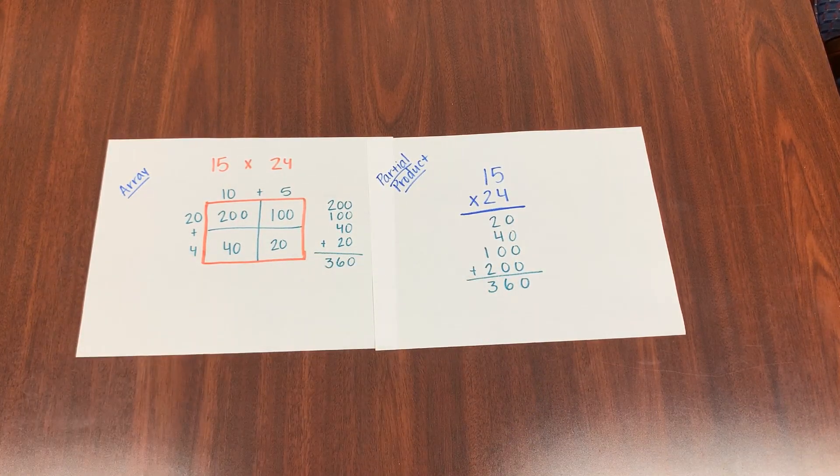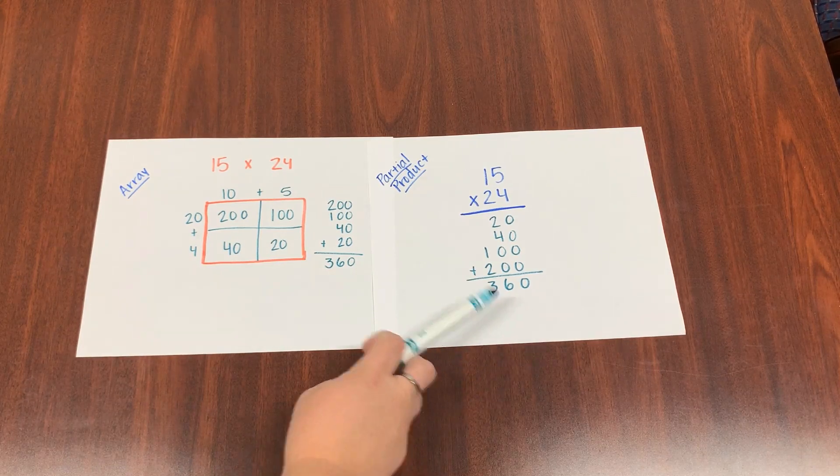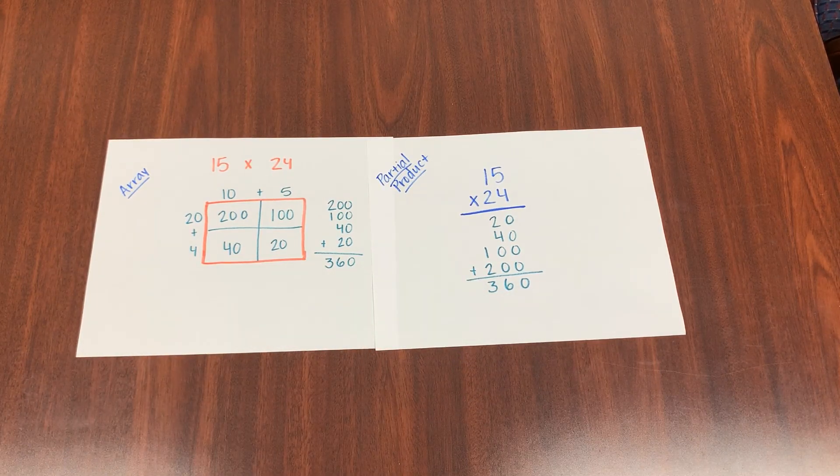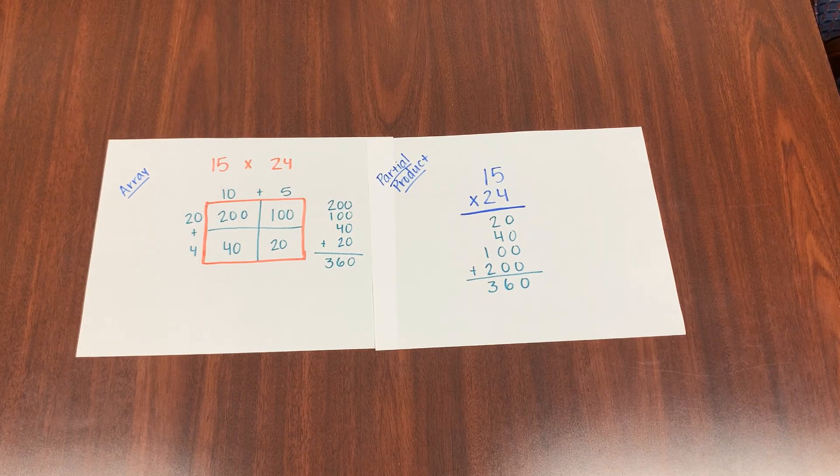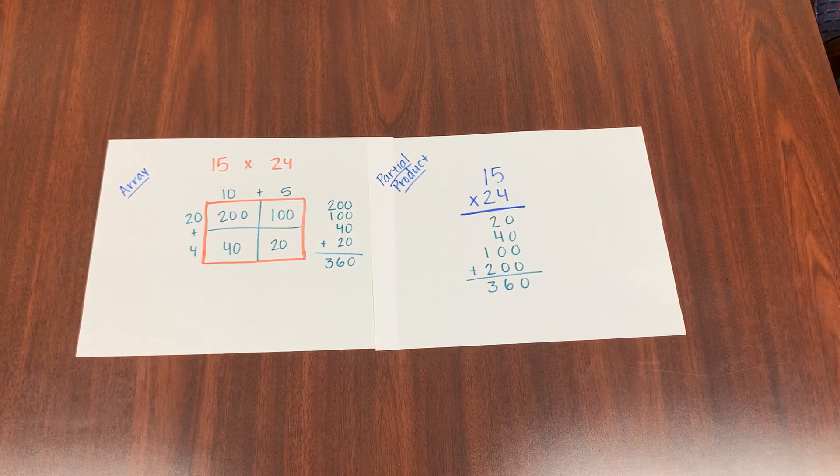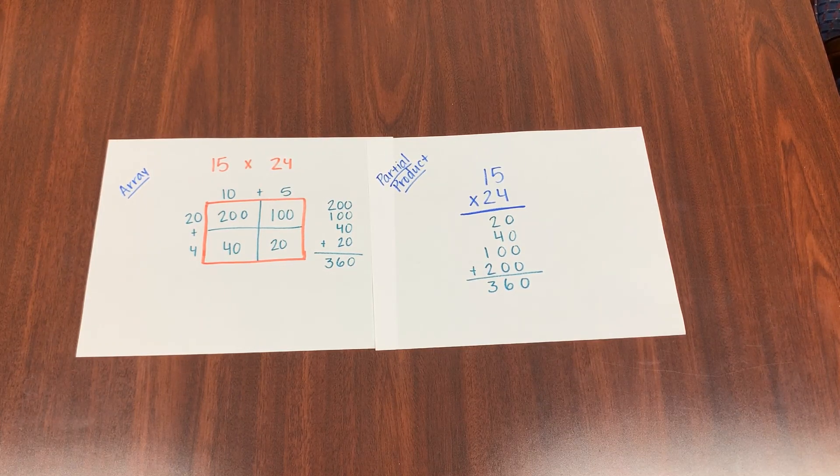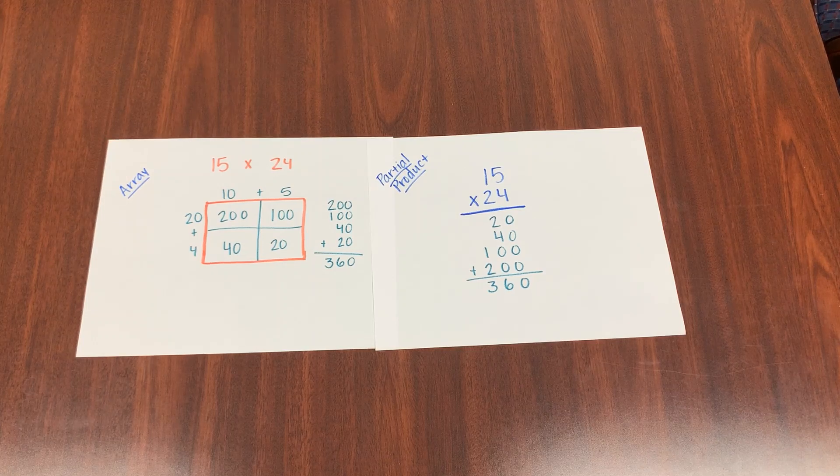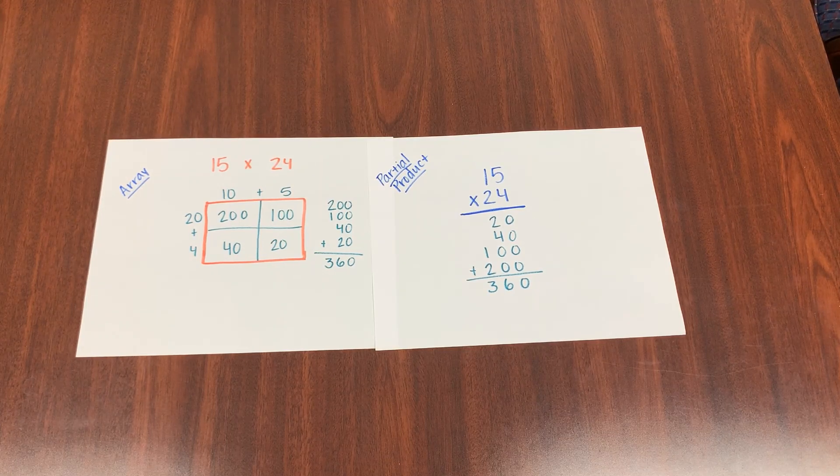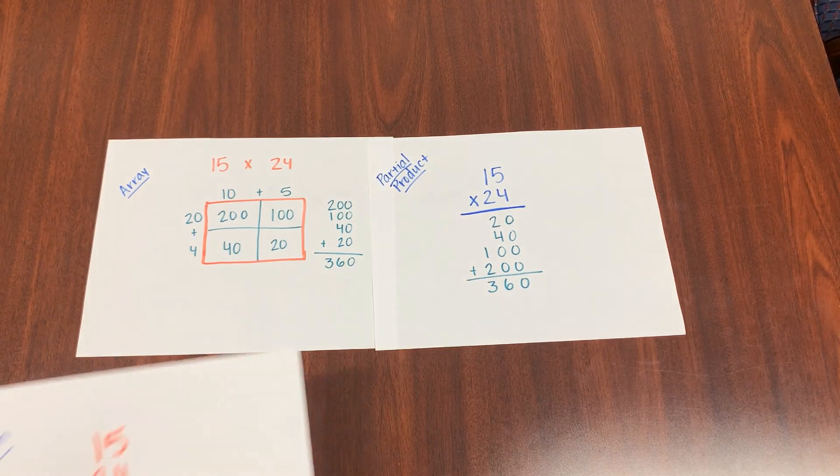And when we add all these up, making sure that we've lined up our place values correctly, we get 360 again. So that's a good way to check your answer. If you know both methods, you solve them both with the same numbers. You can check your answer and see, did you get the same answer both times? If you did, then more than likely your answer is correct.